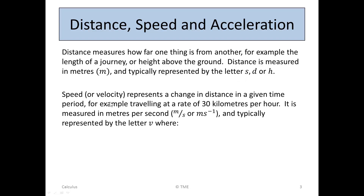Speed or velocity represents a change in distance in a given time period — for example, travelling at the rate of 30 km per hour. So an hour ago you were 30 km away; you've changed the distance in a period of time, so it's distance per time. It's measured in meters per second, written as m/s or ms⁻¹, and typically represented by the letter v, where v is the rate of change of distance — ds/dt, or s′.